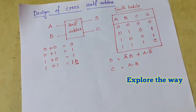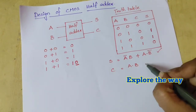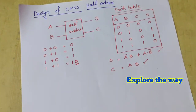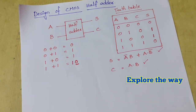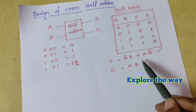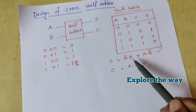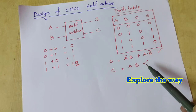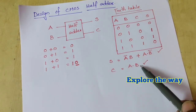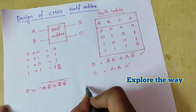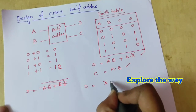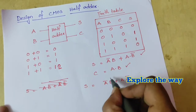To design a CMOS half adder, we need to implement these two logic functions using CMOS logic. To implement any logic function in CMOS, the function must be in whole complemented form; otherwise it generates the complement of the function and we need an inverter at the output. Since S and C are not in whole complemented form, we can convert them without changing functionality by taking the complement of the complement.